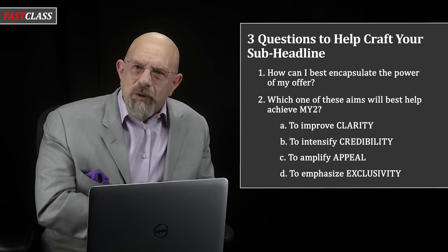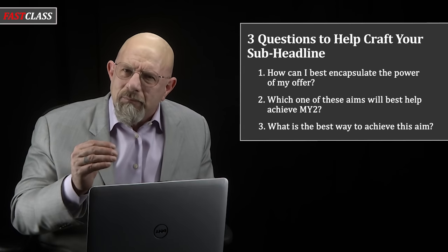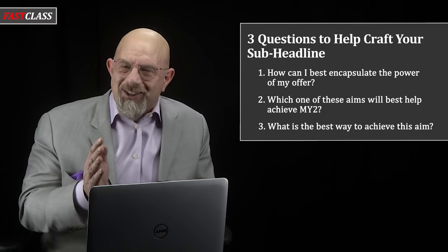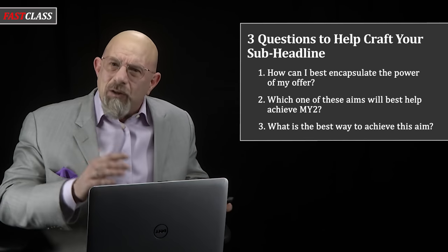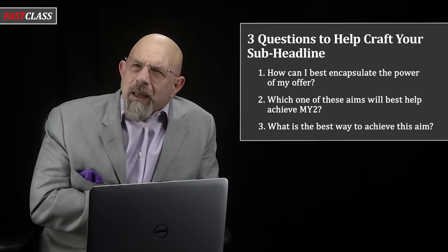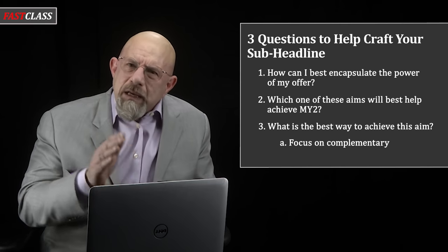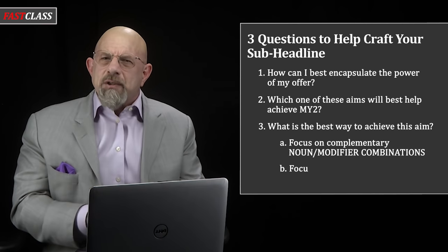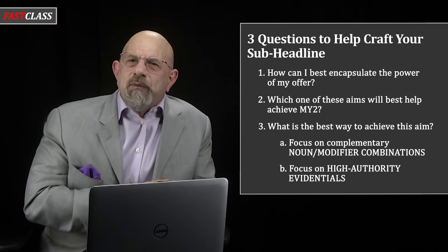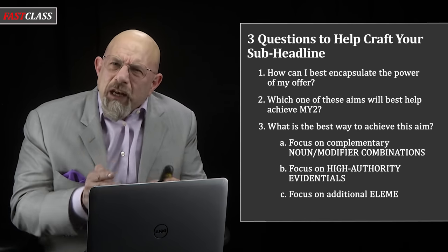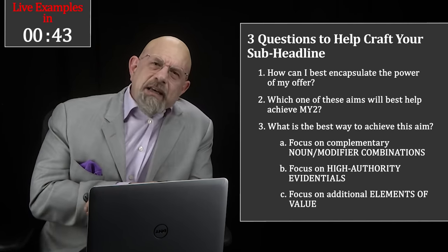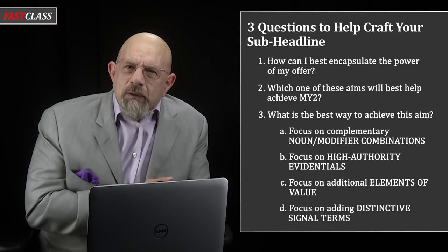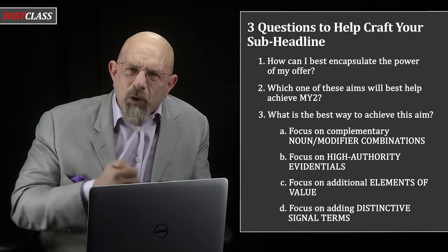Which leads me to the third question, and after this I'll show you the examples: What is the best way to achieve this aim? I'm going to answer that with four tight statements. If your aim is to improve clarity, focus on complementary noun-modifier combinations. If your aim is to intensify credibility, focus on high-authority evidentials. If your aim is to amplify appeal, focus on additional elements of value. If your aim is to emphasize exclusivity, focus on adding distinctive signal terms — words like 'only' or superlatives ending in -EST, like fastest, largest, oldest.